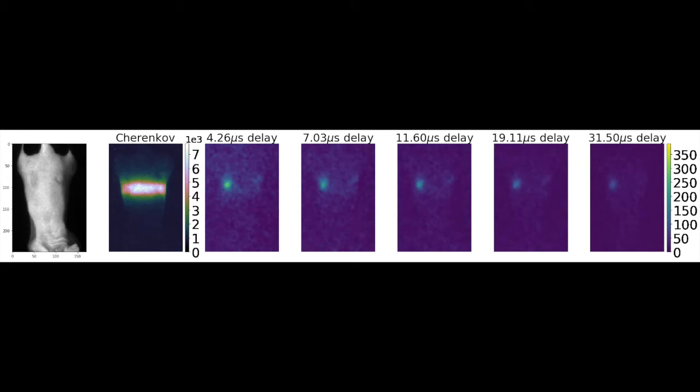Putting it all together, here we can see a thin radiation sheet being scanned over a mouse that has two flank tumors, each injected with a phosphorescent compound. The Cherenkov image shows the position of the radiation beam, whereas the five rightmost panels show phosphorescent images at different delays after the radiation pulse.